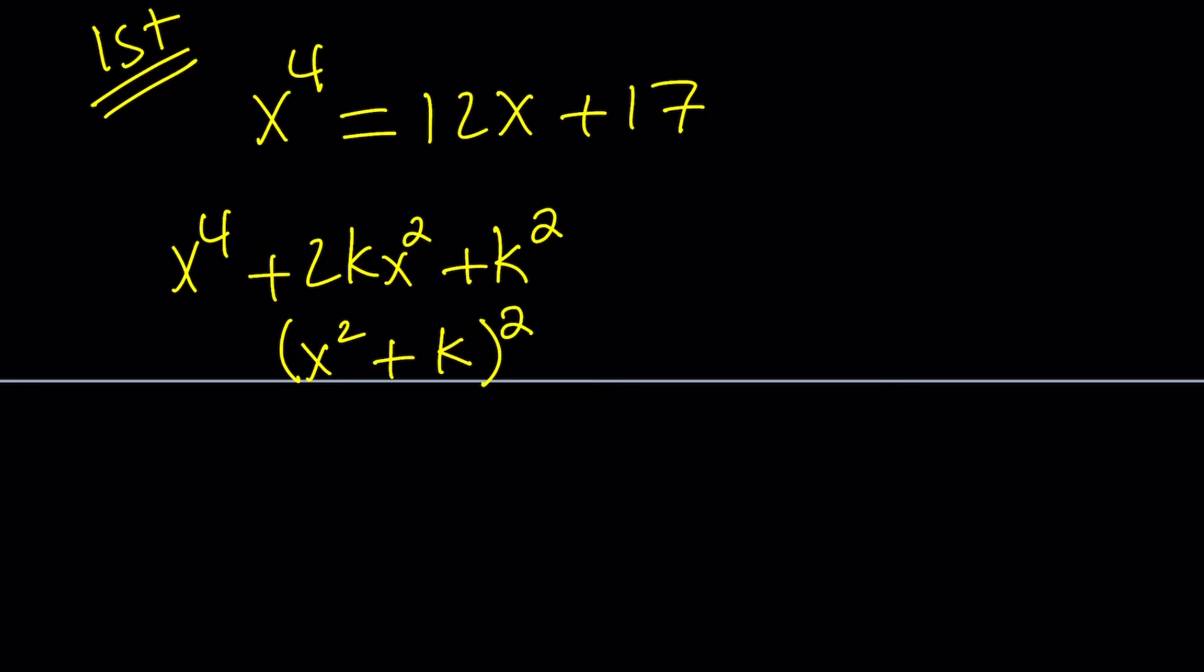And of course, I have to do the same thing on the right-hand side. Since I have a quadratic, let's add that first, and then bring in the 12x. And then I have a constant 17, and then I can just add the k squared. So far, so good? Awesome. Now, these two things are equal. And what does that mean?